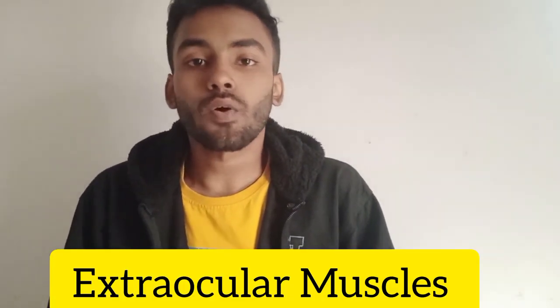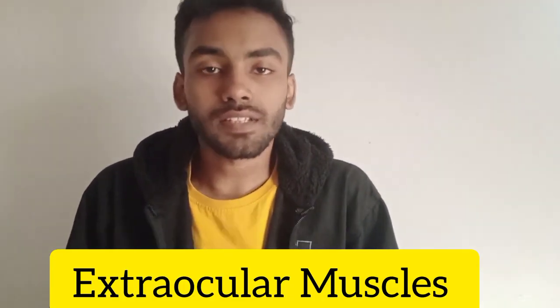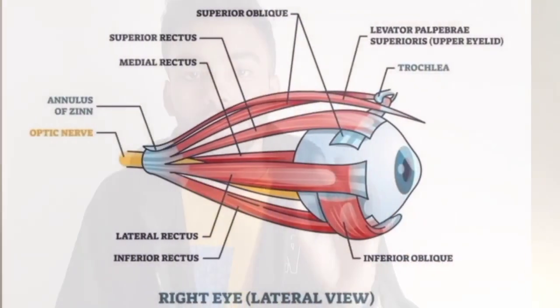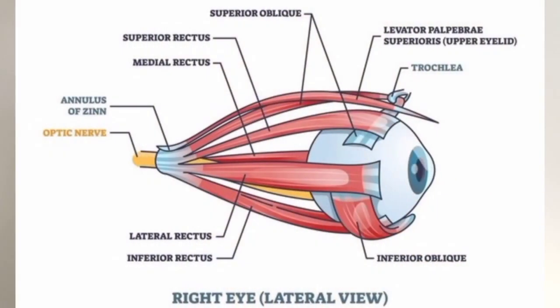Good morning everybody. Today my topic is the extraocular muscles, their origin and their insertion. I will first talk about the origin of the recti muscles. All four recti muscles originate from a common tendinous ring called the annulus of Zinn, which is located at the apex of the orbit.